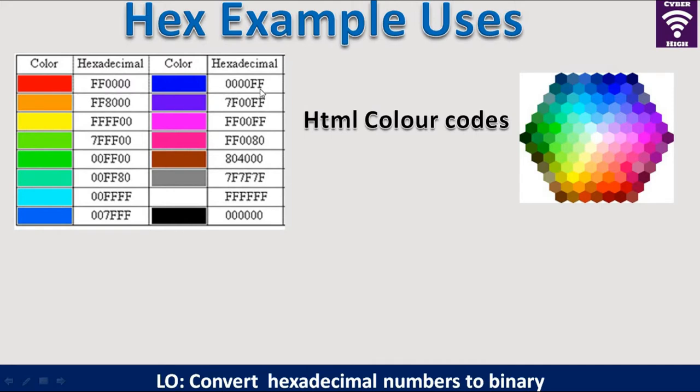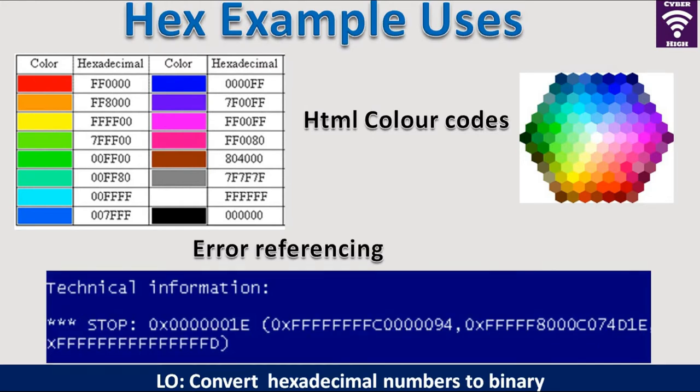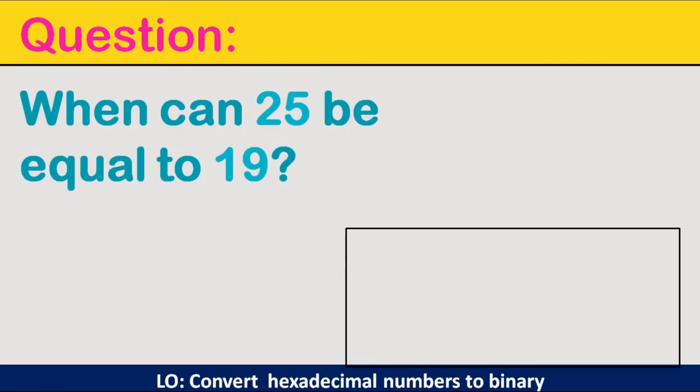It is important to also understand that hexadecimal numbers are also used in technical information. When you are dealing with error referencing in computing, hexadecimal numbers are used. You may have seen the famous blue screen when a computer develops an error and it gives you some strange codes on it. These are error references which technical people can understand and solve problems related to the error.